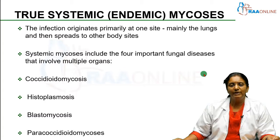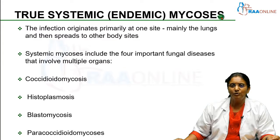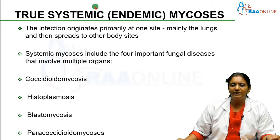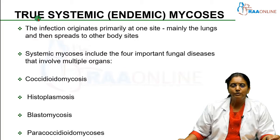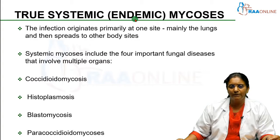What is systemic mycosis? Whenever you say mycosis, 'ses' means it is plural and 'sis' means singular. 'Myco' means anything to do with fungi. So systemic mycosis means affecting the whole body — many organ systems. They are also called true systemic mycosis or endemic mycosis, as they are endemic to certain areas and do not spread all throughout the world.